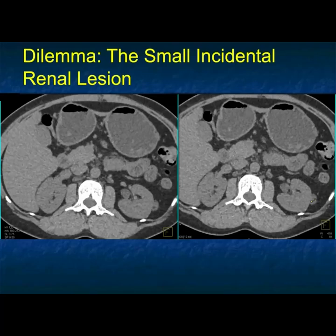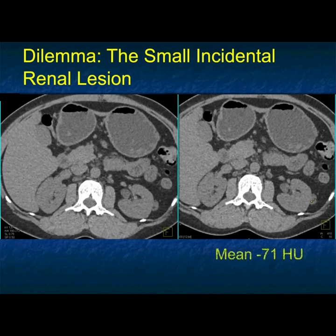Look at this case — that small renal lesion in the left kidney. All of a sudden you're going to look at it and say, what could this be? It's not a cyst, but that little dot there is very important. If you measure that little dot, it measures fat and has a mean of minus 71 Hounsfield units.